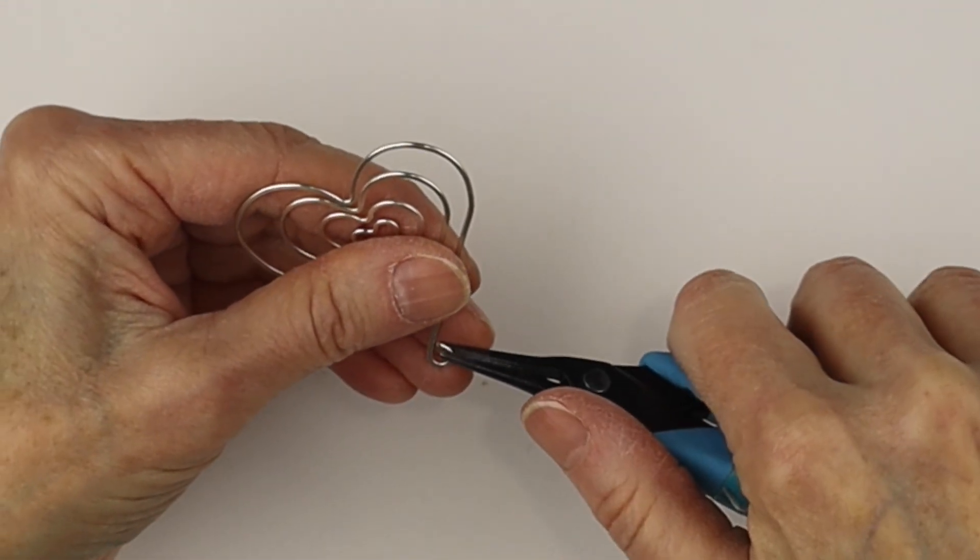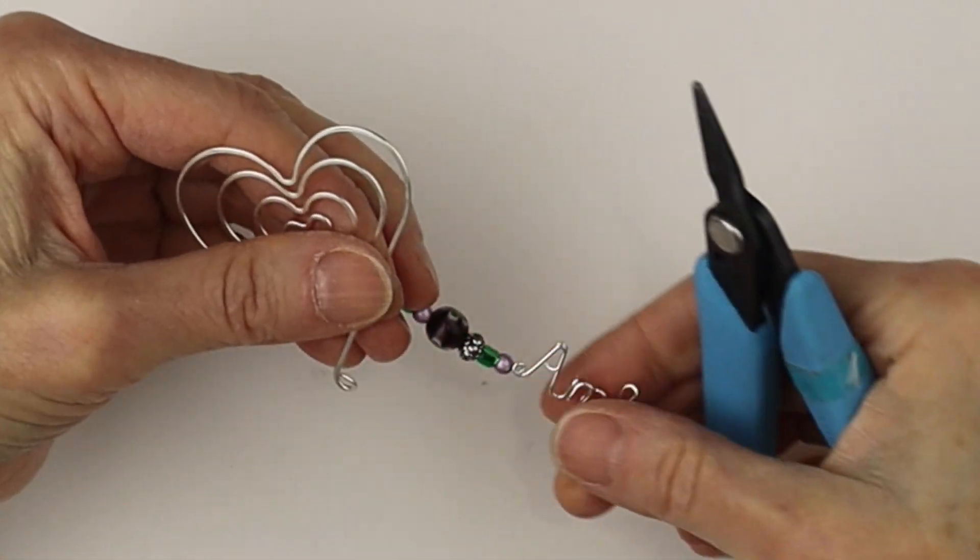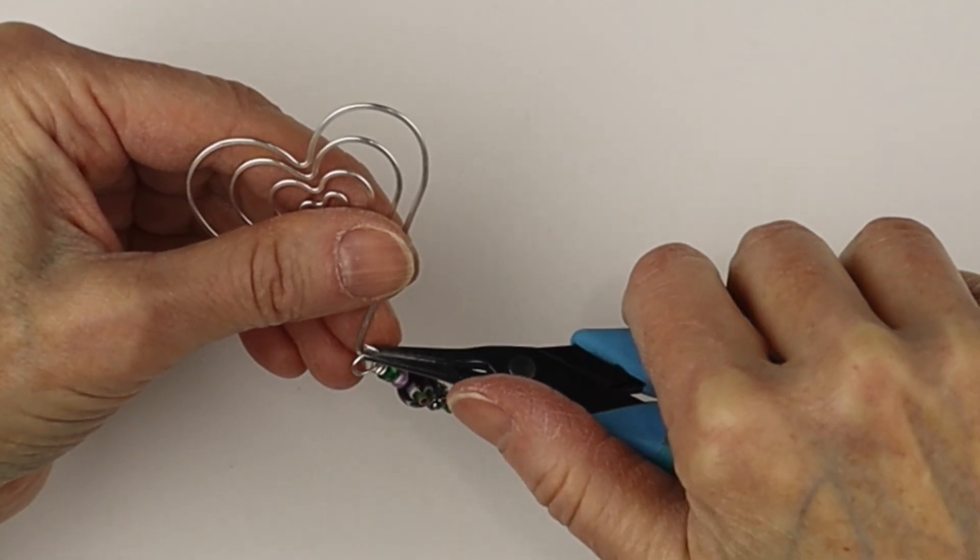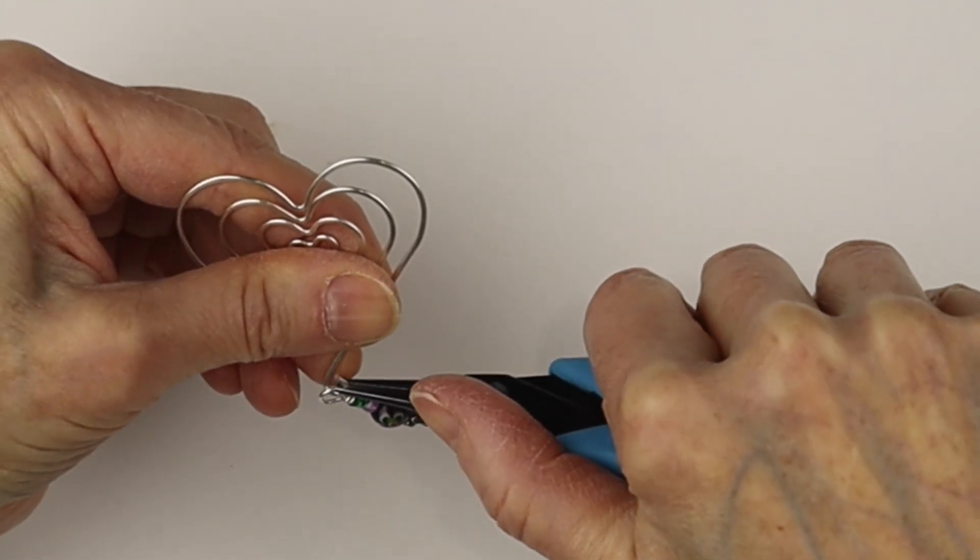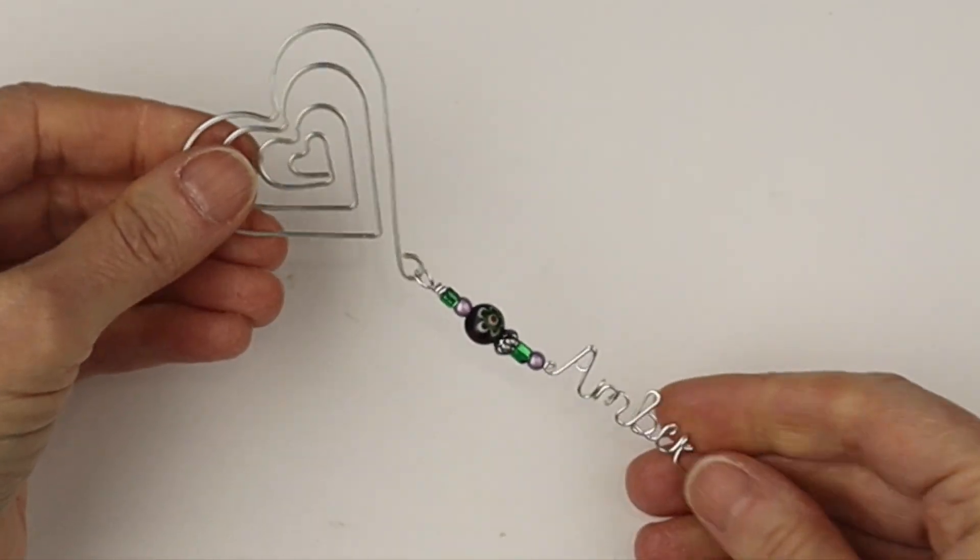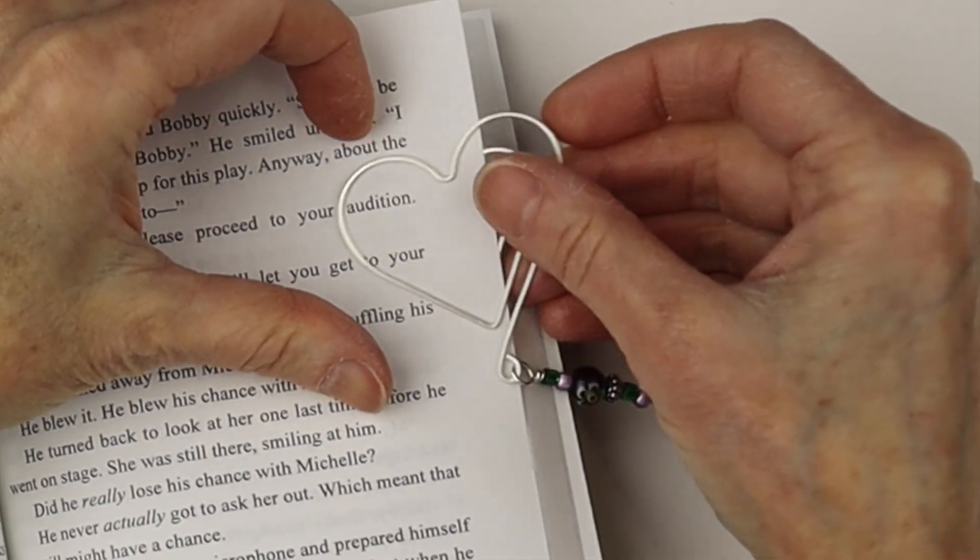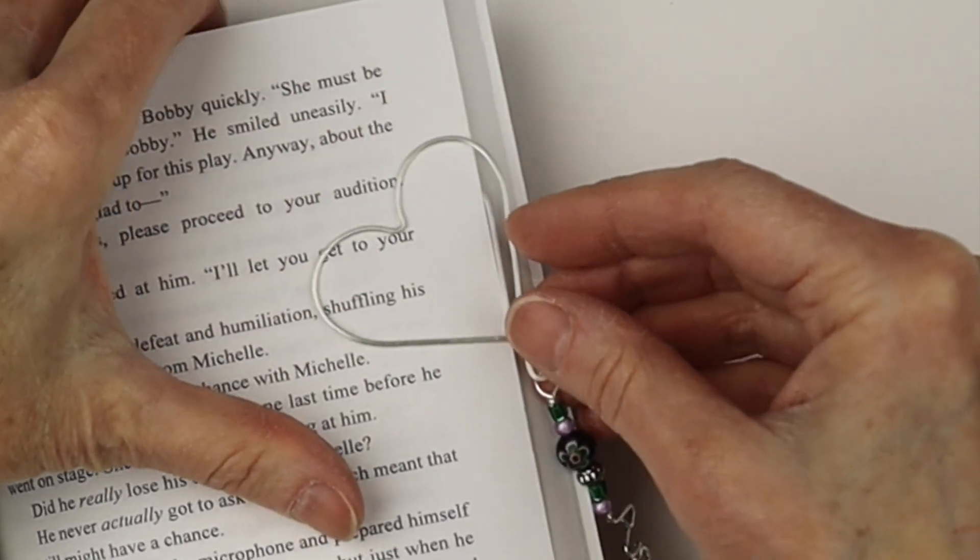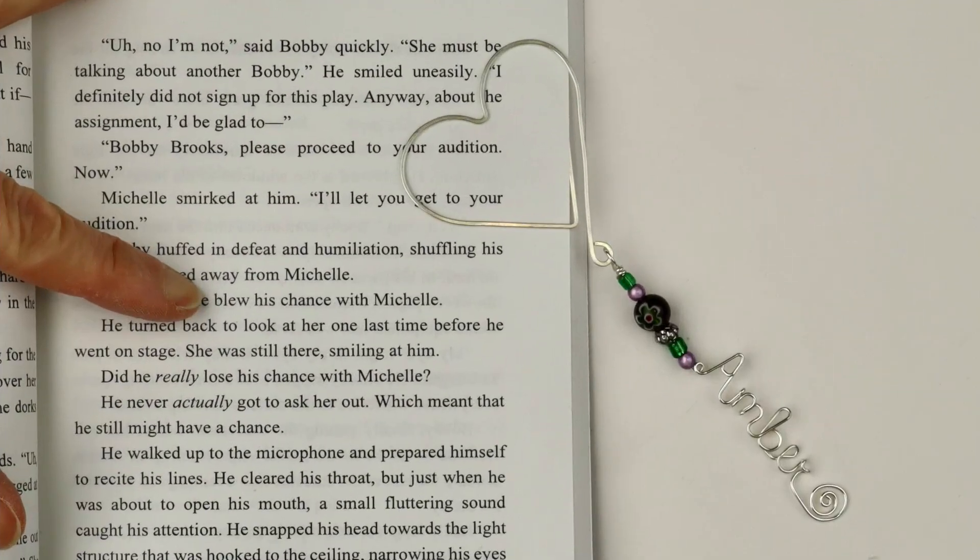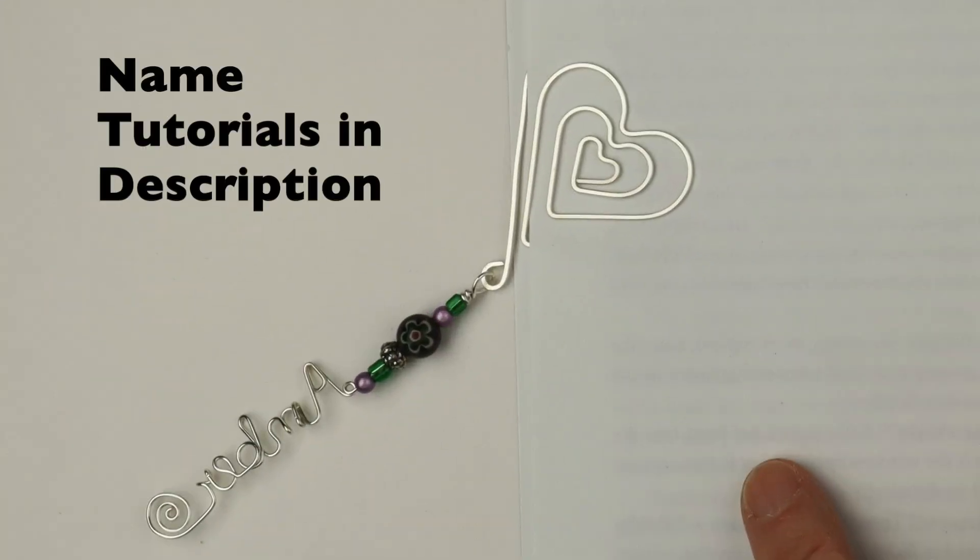And from there we're just going to open up the little loop on the heart. And we will dangle the name down and then close up that loop. Press it closed. And you can just slide it right into your book. And the name dangles down at the side. Be sure to check out the description below for all the name tutorials.